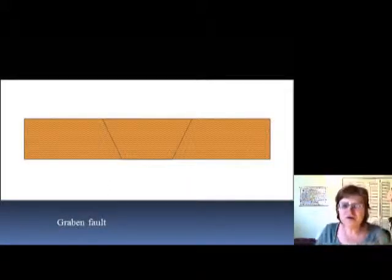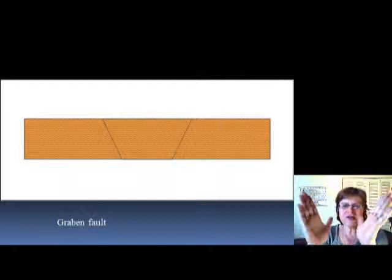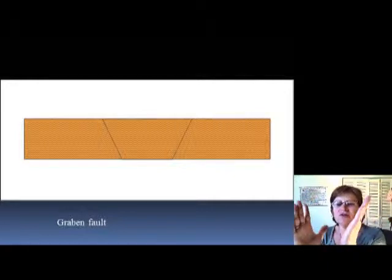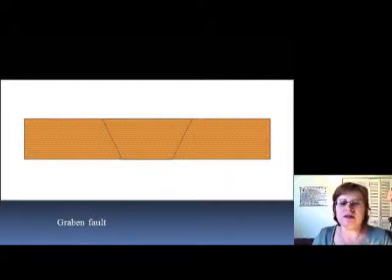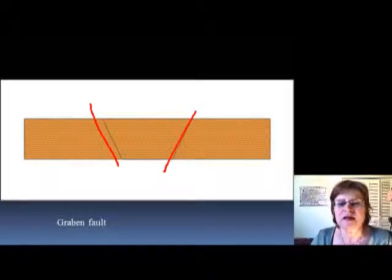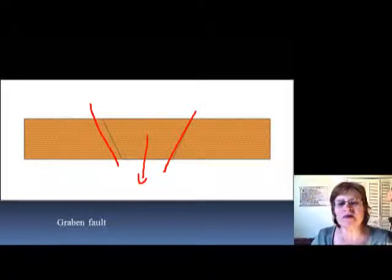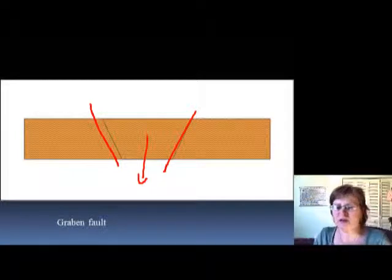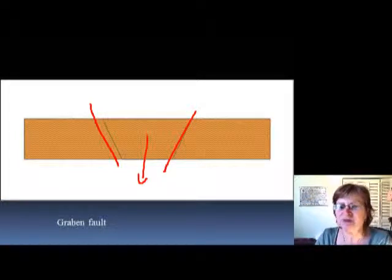When you have two normal faults facing each other, that is going to make the so-called graben fault. Here is one normal fault and here is the other — when it moves down, it makes the graben fault. You will see on the slide — it's an animated one — so you'll be able to see exactly how it happens.